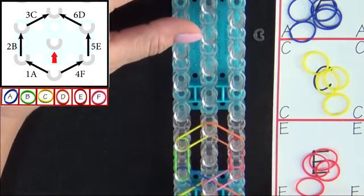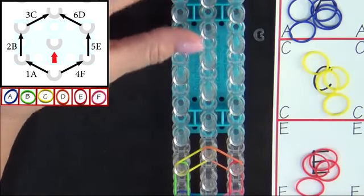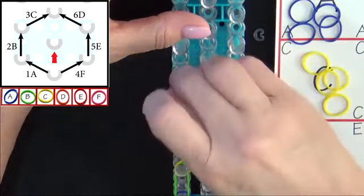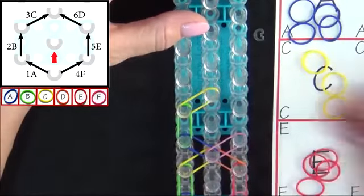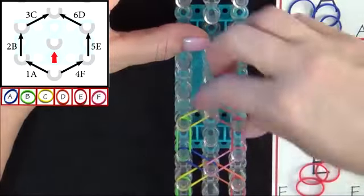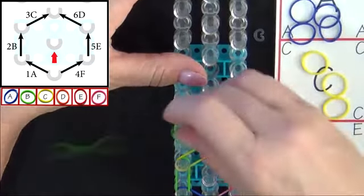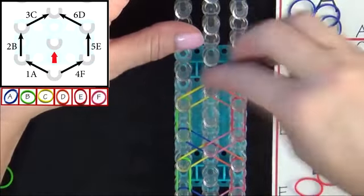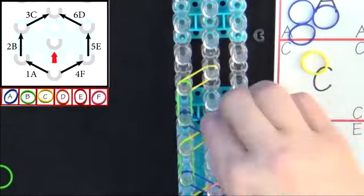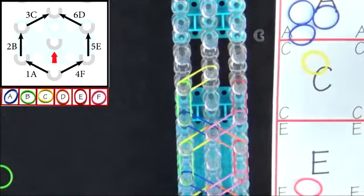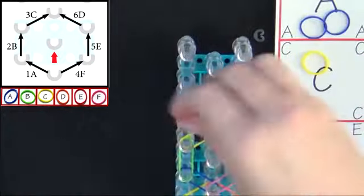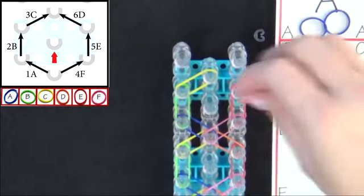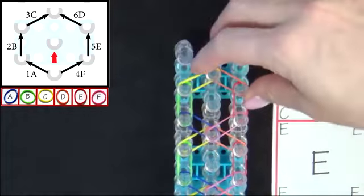Pause the video here and refer to the diagram on your screen until you reach the end of the loom. We'll fast forward from here. And you place your last band into the center pin.